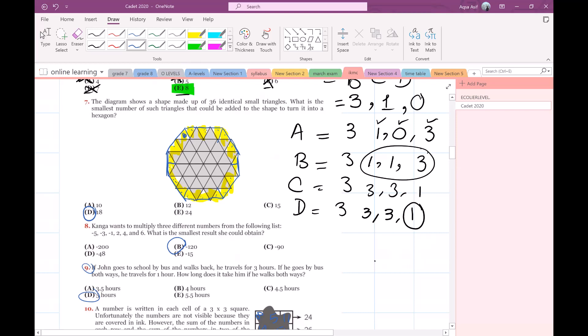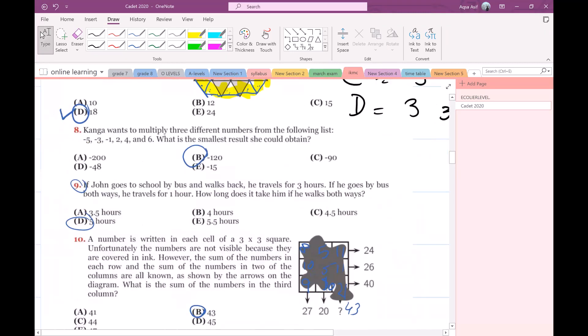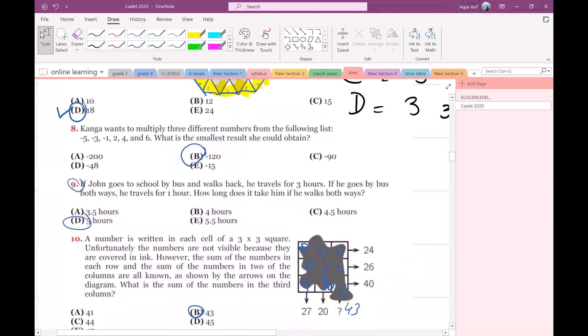Question number 8: Panga wants to multiply three different numbers from the following list: -5, -3, -1, 2, 4, and 6. What is the smallest result she could obtain?